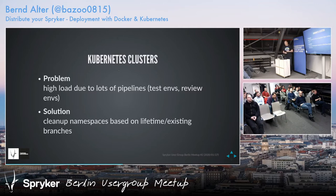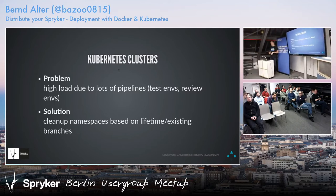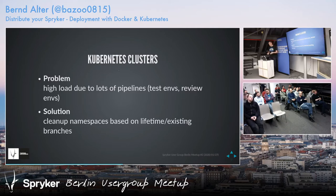We had quite a high load when many people were working. We built test environments for running front-end tests — one dedicated environment per pipeline, per branch or per push — spinning up a new namespace with all services, all containers, all pods. Then also review environments, because you want one review environment for every branch. All these namespaces piled up — we had situations with 60 or 80 namespaces running in the cluster, eating up all resources, and people could not work anymore.